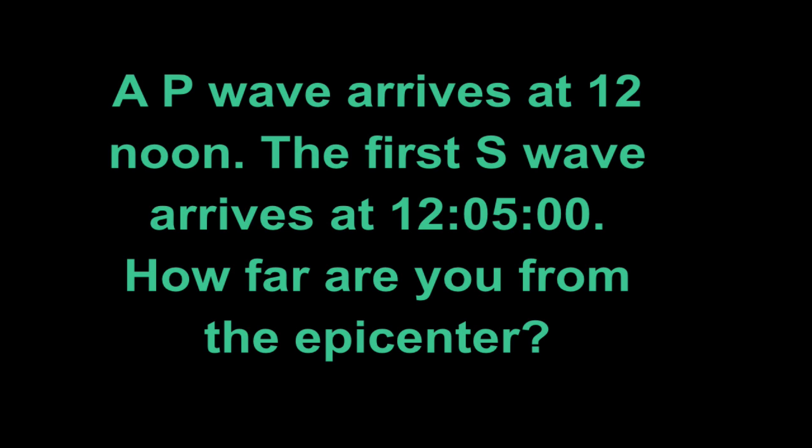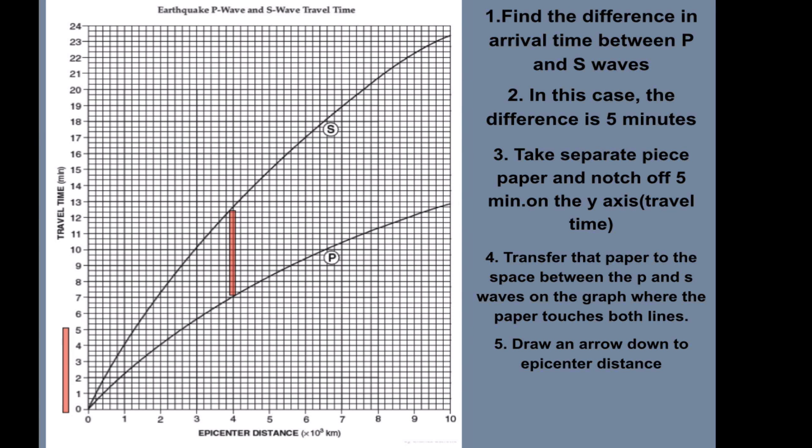Then we get to a situation like this. A P wave arrives at 12 noon. The first S wave arrives at 12:05. How far away are you from the epicenter? This takes a little bit more work. So remember those times. We have 12 o'clock, or noon. 12:05 for the S wave. There's our P wave. These steps are extremely important. You need to write these down. First thing you do, find the difference between the P and S wave arrival times. So the difference between 12 and 12:05 is 5 minutes.